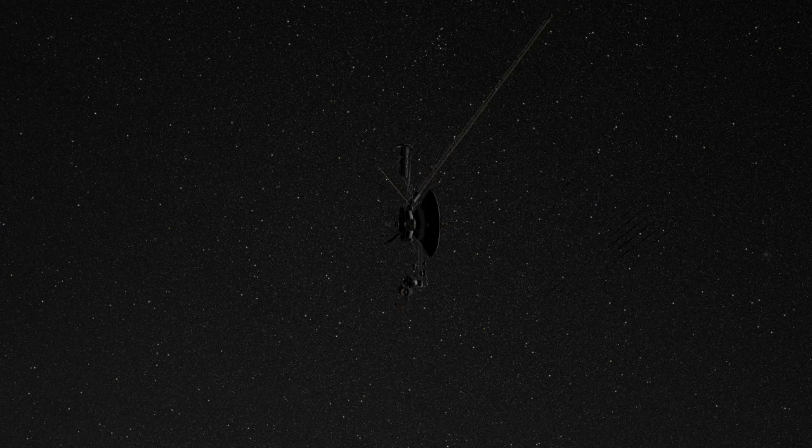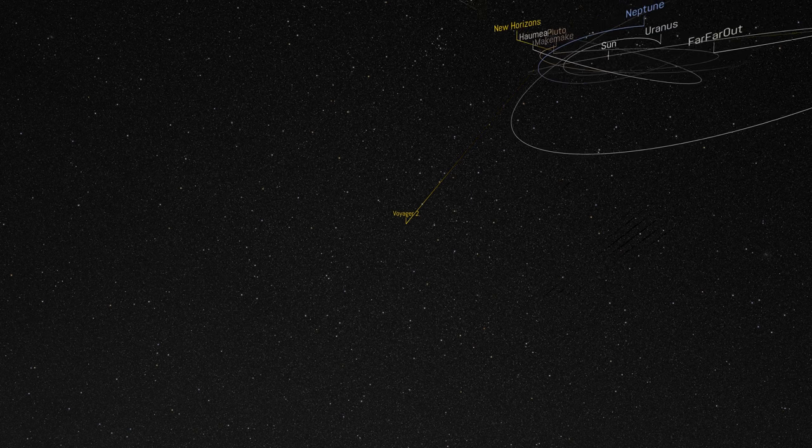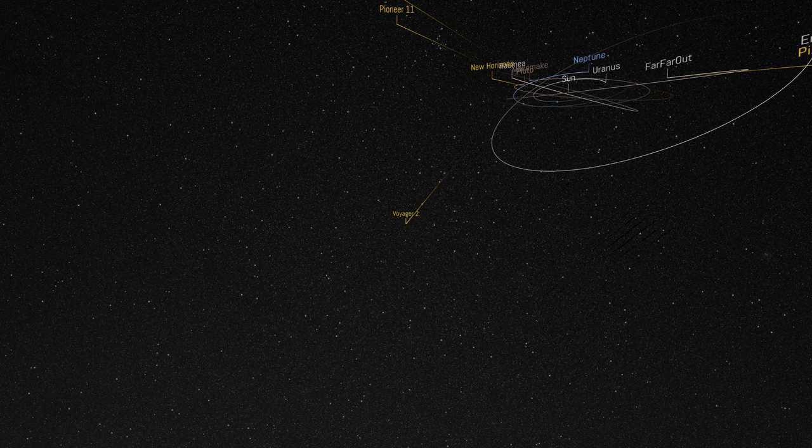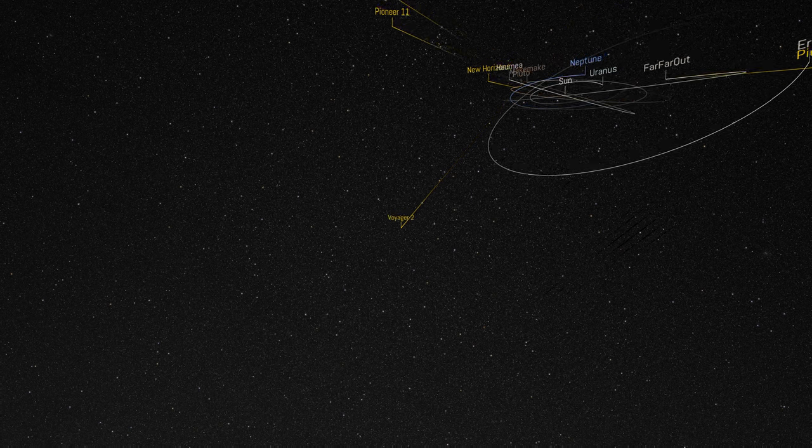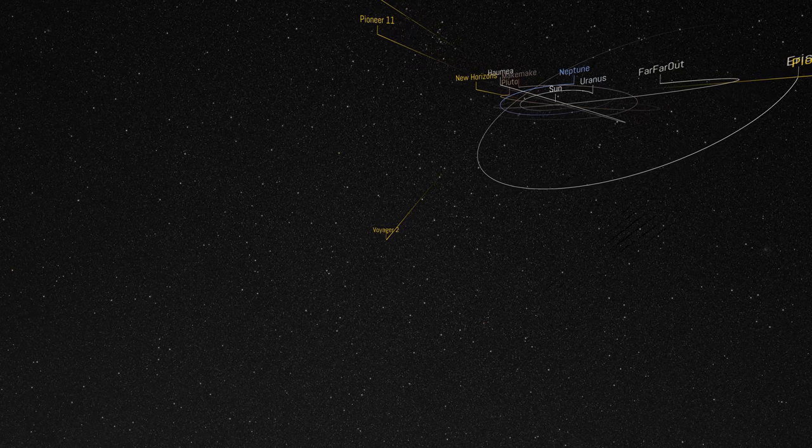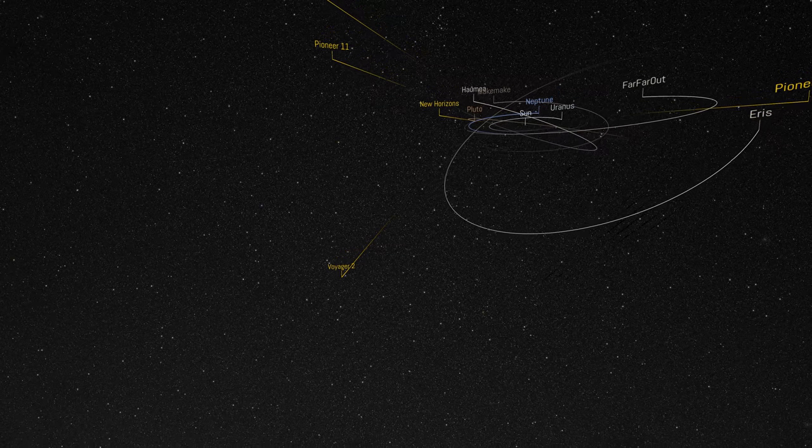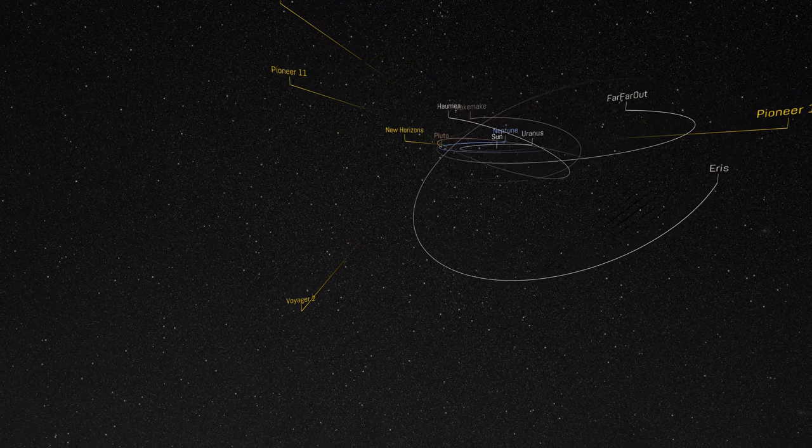Let's fast forward to now. Voyager 2 is still out there, as is Voyager 1, also launched in 1977. Three other space missions are at the outskirts of the solar system: Pioneer 10 launched in 1972, Pioneer 11 launched in 1973, and New Horizons in 2006.